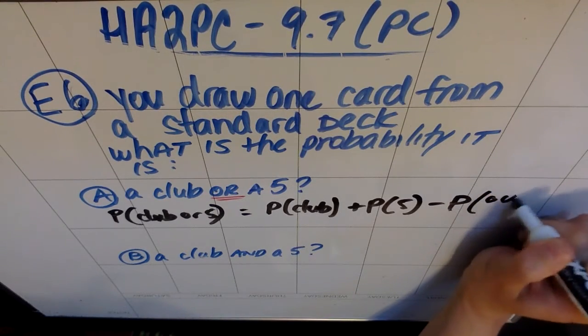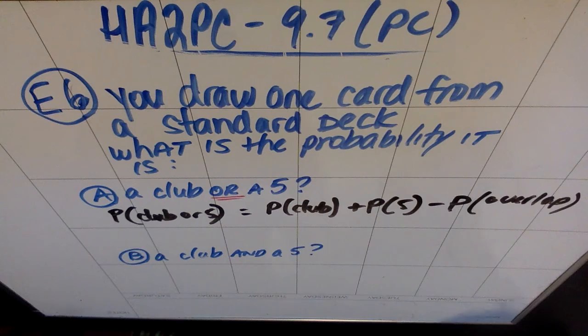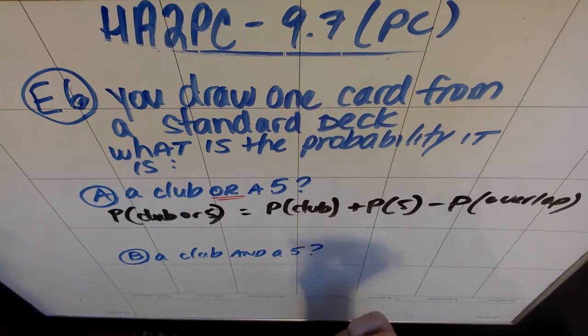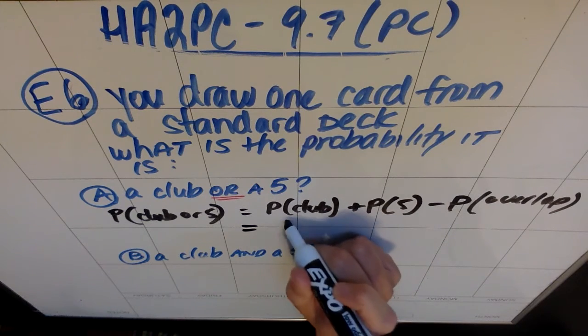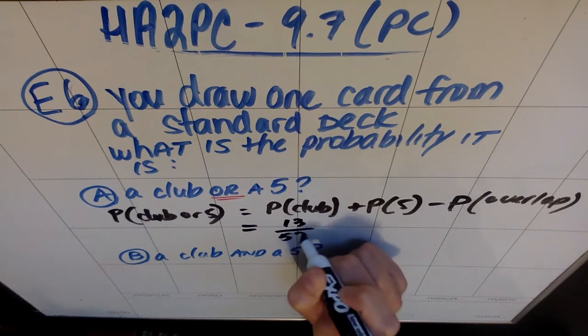Another way to think about it is the probability of the overlap. What thing did I count twice? What overlaps between those two options? In this case, it will be the 5 of clubs. So the probability that I draw a club would be one-fourth of the deck. There are 13 out of 52 that are clubs.